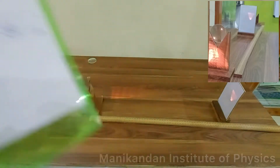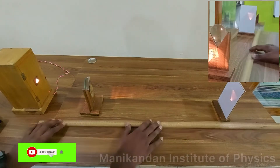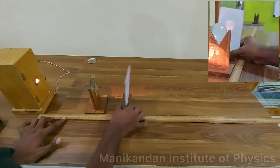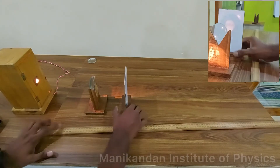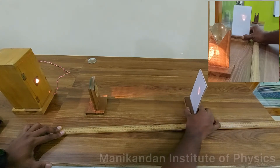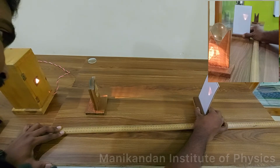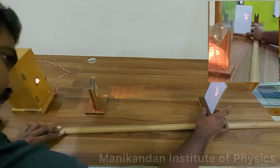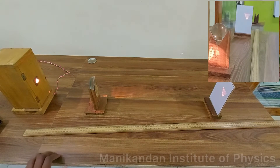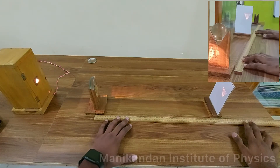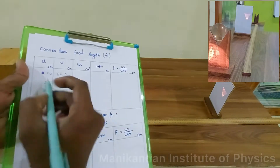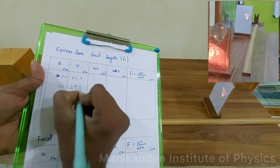Next, I am going to fix my u value at 22 cm. I am changing the value from 20 to 22, and now I am going to find the corresponding image distance by moving the screen away from the lens. My image forms clearly — the distance from the lens to the screen is approximately 49.5 cm.